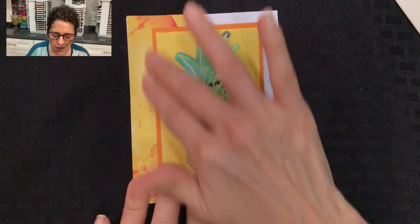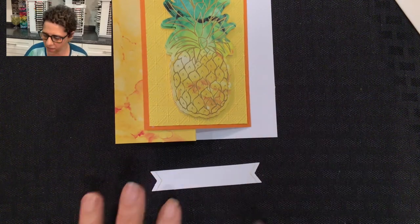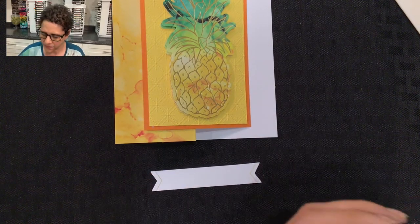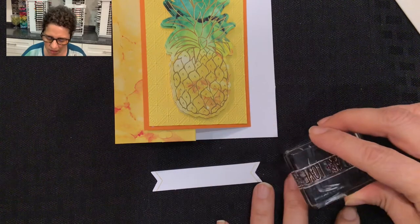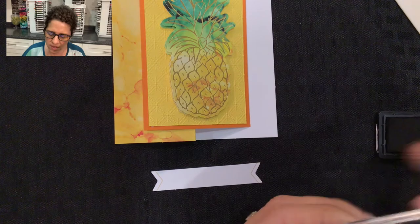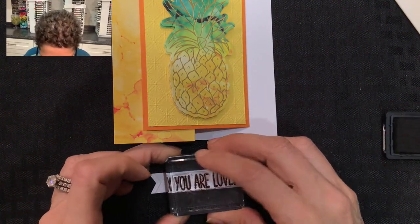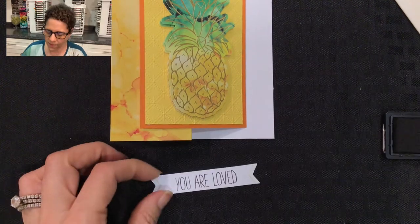Now we need some words. In the set we have this little flag here, so let me grab my ink. The words we're going to use say 'you are loved' and this is one of the stamps that come in the Paper Pumpkin kit. I'm going to stamp my words right in the center of that banner.